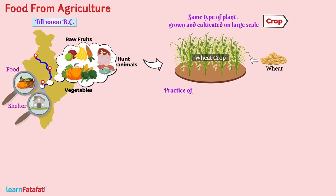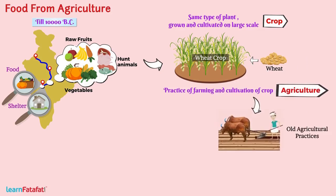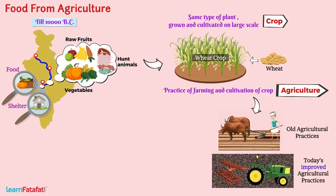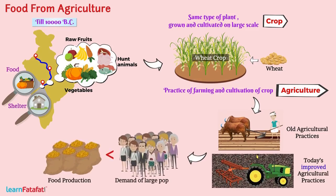The practice of farming and cultivation of crops is called agriculture. As compared to age-old practices, today agricultural practices are much more improved. But still, the food production is insufficient to meet the demand of the large population, and so there is still a need for improvements.